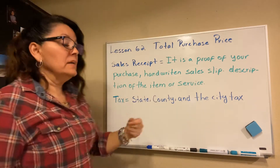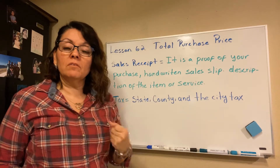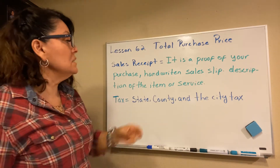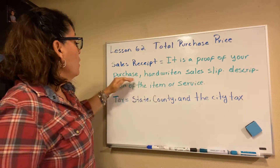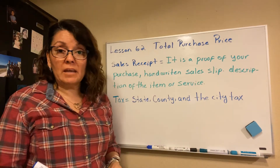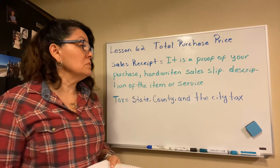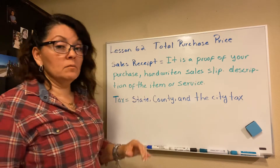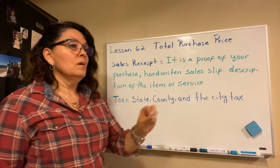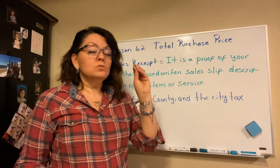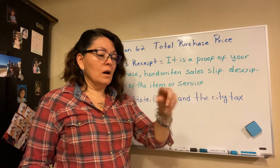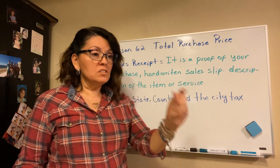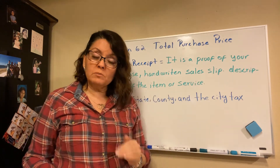When you buy something, they have to give you a receipt. A receipt is a proof of your purchase — it could be handwritten, but it's still a receipt. It is a description of the item or the service: for example, how many lamps you bought, how many plates, and how much each one cost. There has to be a description of that.